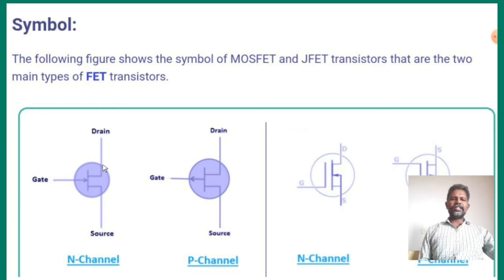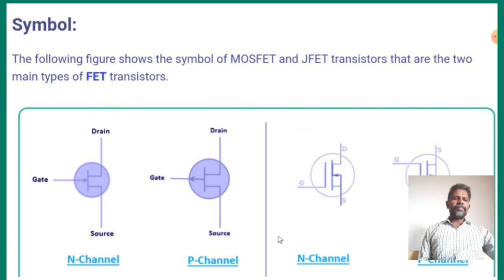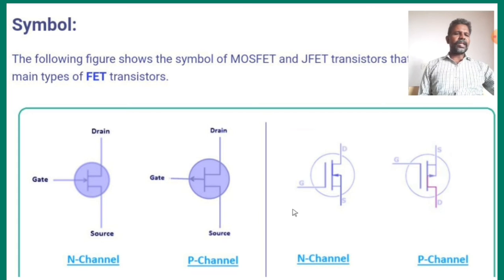Here we have a drain. This is the drain terminal, this is the gate terminal, and this is the source terminal. This is the P-channel. Next, this is the N-channel — so drain, source, and gate.